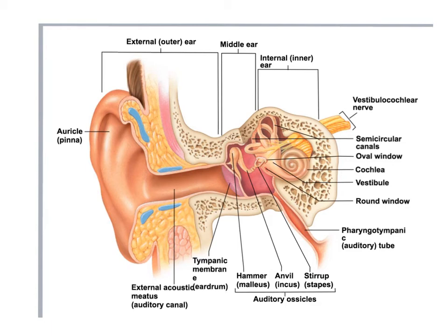This video covers the lecture for the special senses — specifically the ear. The ear houses two senses: hearing and equilibrium, or balance. The receptors for those senses are mechanical receptors, meaning they respond to some type of mechanical movement, in this case vibration. There are different organs that sense the two functions of hearing and balance, but first let's talk about the anatomy of the ear.